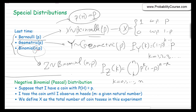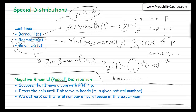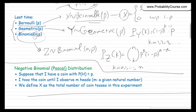The next distribution is the negative binomial, or Pascal distribution. To present a specific example using our coin: suppose I have a coin where the probability of heads is p. I toss the coin until I observe m heads, where m is a given natural number — m could be 1, 2, 3, and so on. We define x as the total number of coin tosses in this experiment.